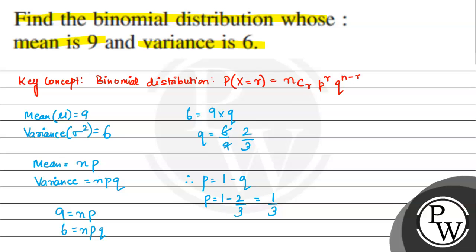So now we have n ki value nikal lete hai, in dono ki madat se. q a gaya 2 by 3. n is equal to, 9 is equal to n multiplied by p, p ki value is 1 by 3. Multiply kar do, transpose kar do. 9 multiplied by 3 ho jaye ga mera n. So n would be equal to 27.